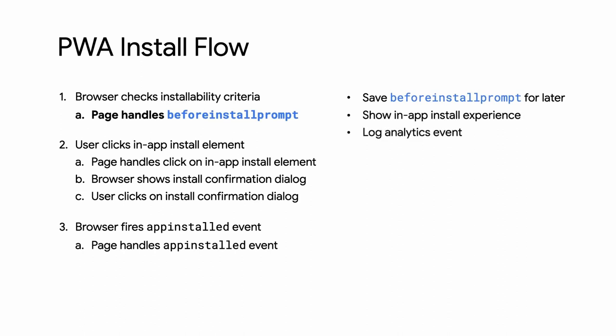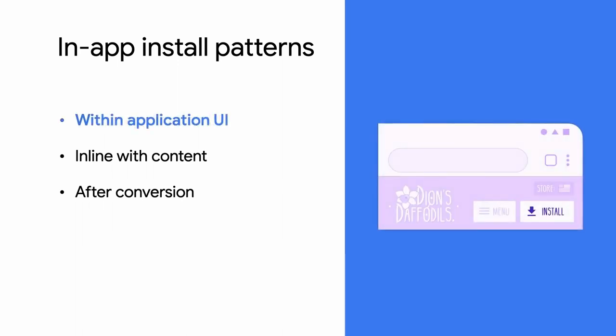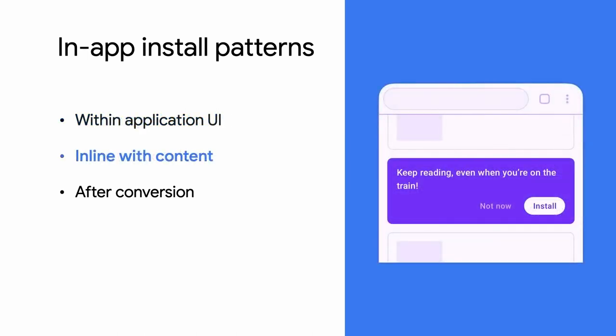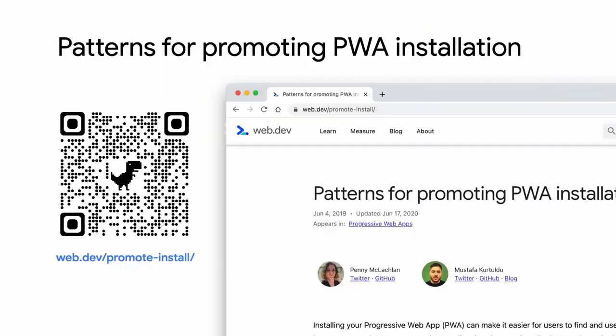To measure the effectiveness of the install flow, log it to analytics. There are many different patterns that you can use to promote the installation of your PWA — for example, a button in the header, some kind of promotion shown inline with other content, or a button shown at the end of a critical user journey. You can combine more than one of these techniques, but be careful not to overwhelm or annoy the user. Be sure to keep promotions outside of key user journeys and avoid disruptive patterns like interstitials.